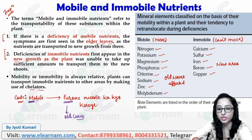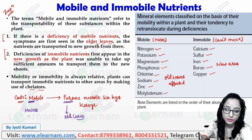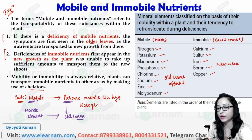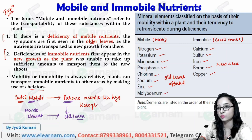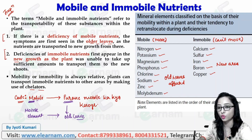You can remember that because of a mobile element deficiency, the older leaves are affected. The code is: if you want to get a new mobile, what do you do with the old one? That reminds you that mobile element deficiency affects old leaves.